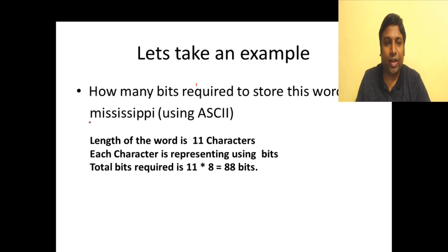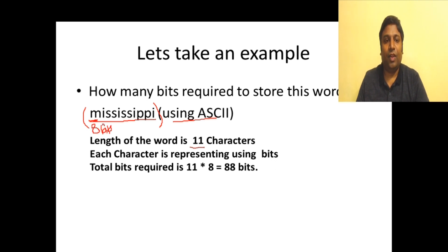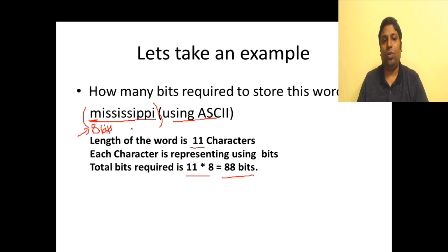Let us take this particular string 'Mississippi' and see how many bytes we need to actually hold this data. The length of this word is actually 11 characters. We will encode it using ASCII, so each character will be stored using 8 bits. The total number of bits required to store Mississippi is 11 × 8, that is 88 bits.